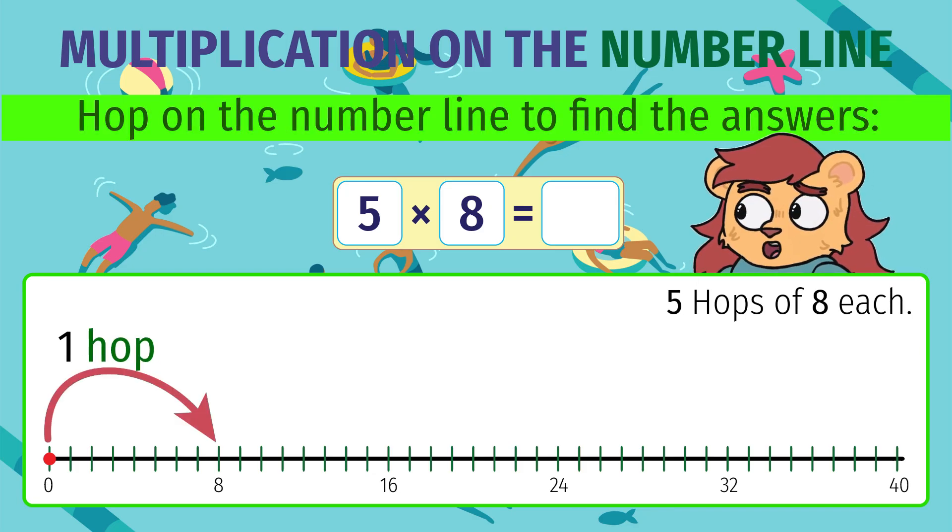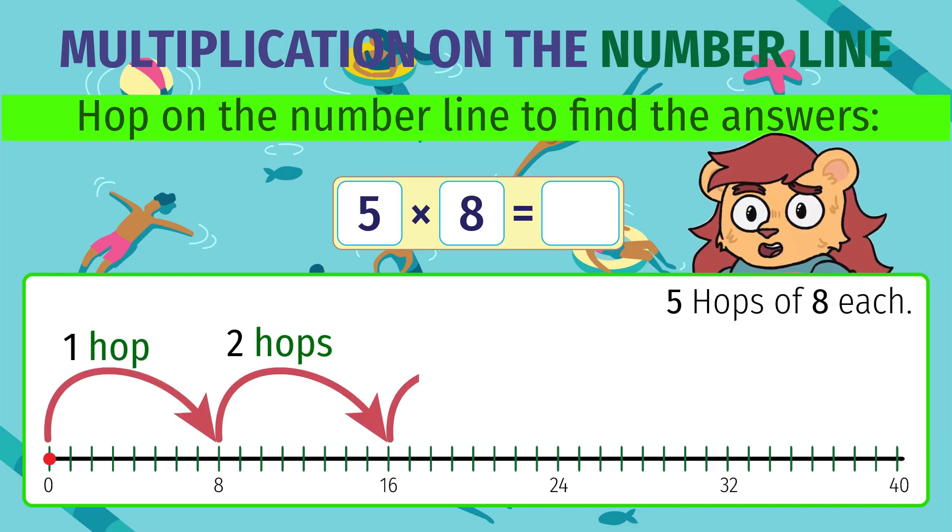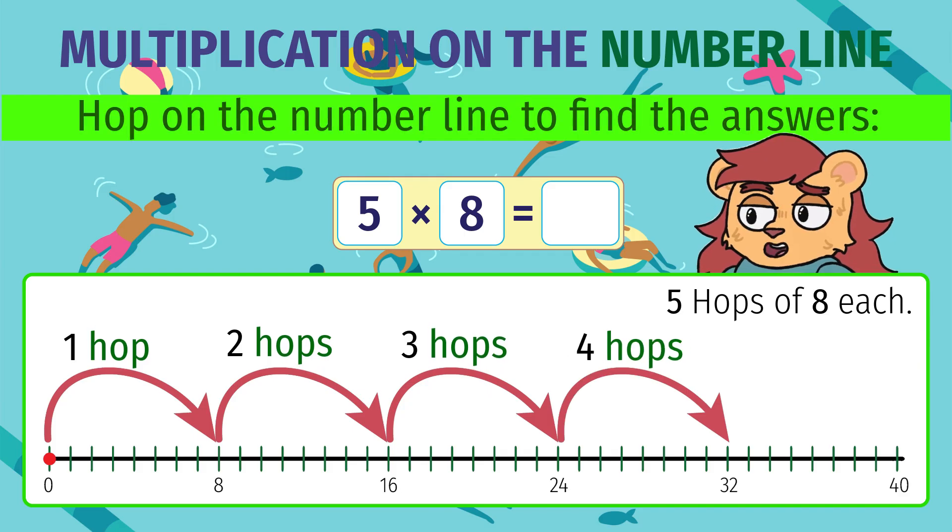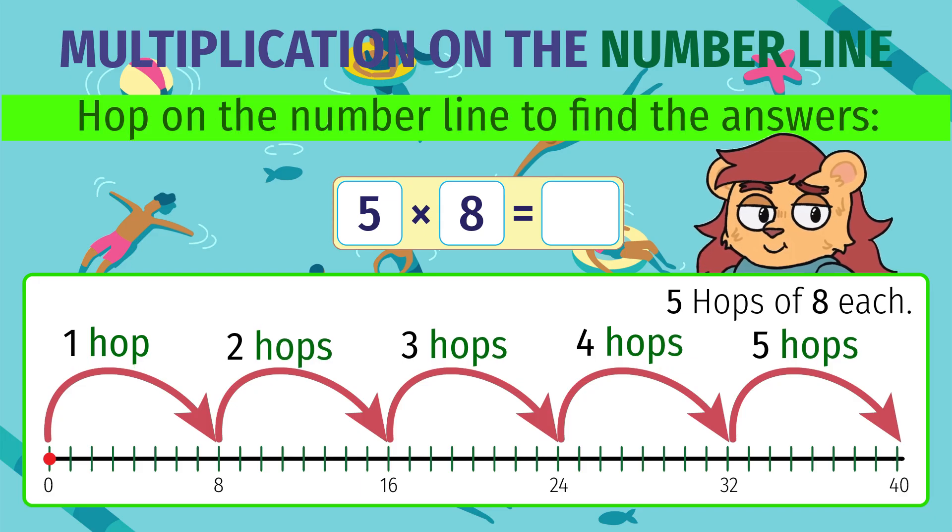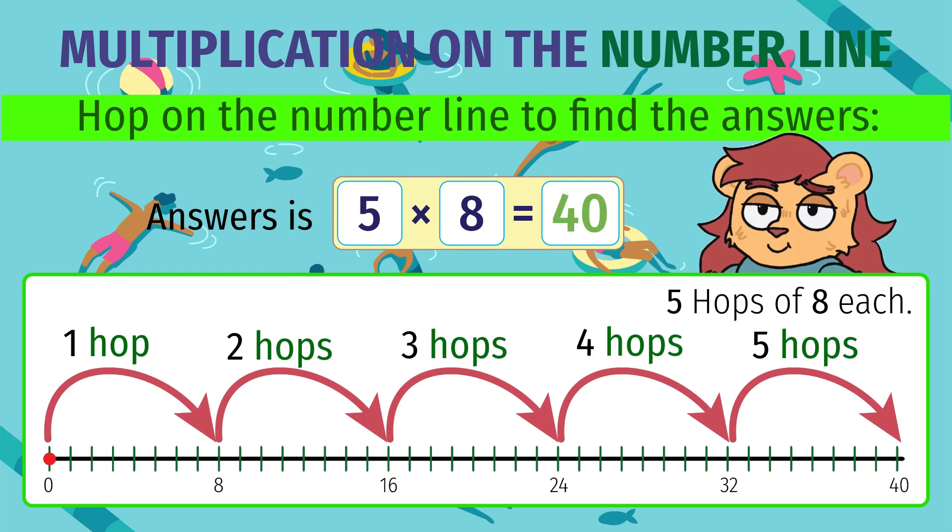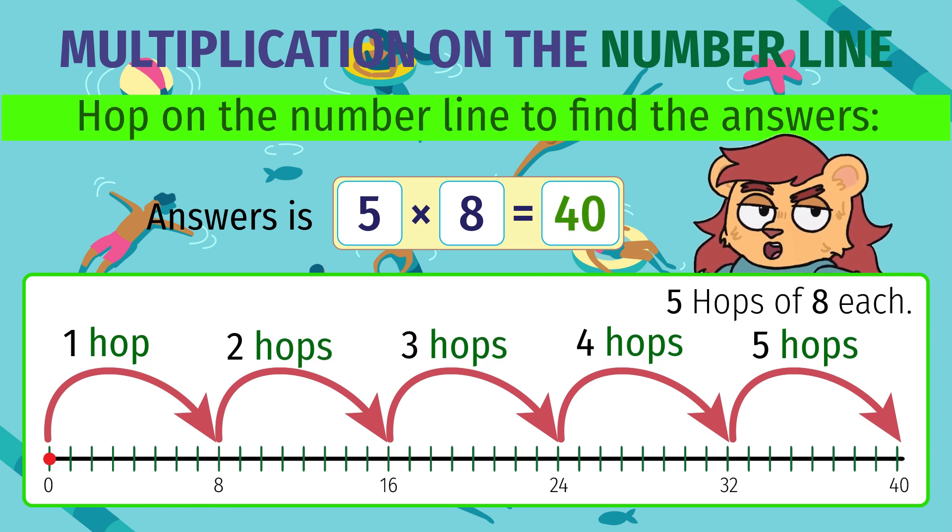Remember, 5 into 8 means 5 hops of 8. So we hop 5 times, each time by 8 numbers. The number we land on, 40, is the answer.